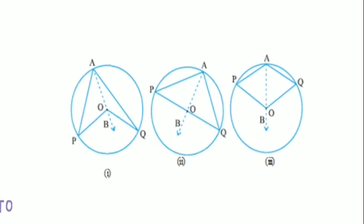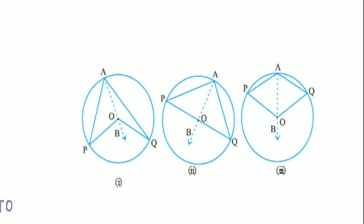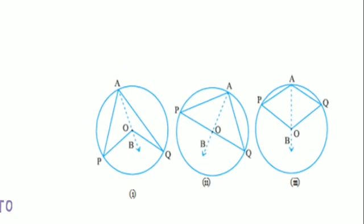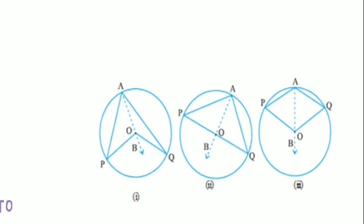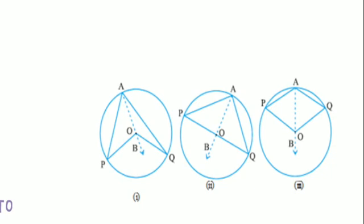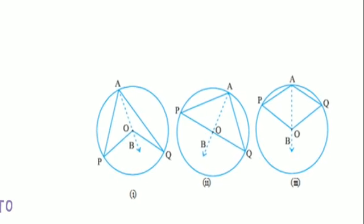Similarly, angle QOB is equal to angle OQA plus angle OAQ. This is in all three figures—don't only mark one figure. Now, OP is equal to OQ because they are radii of the same circle.